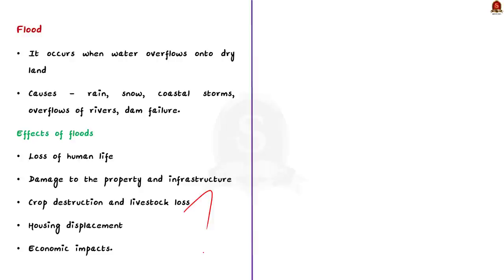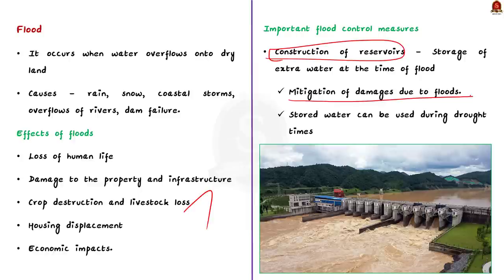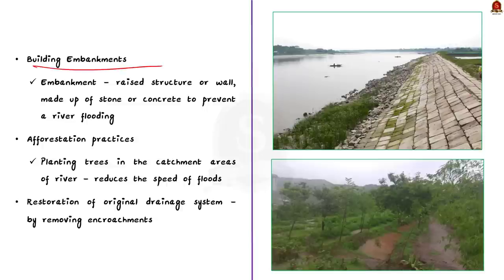Now, the important flood control measures. The first measure is the construction of a reservoir. By constructing reservoirs in the course of a river, we can store extra water at the time of flood — this has a double advantage: it mitigates flood damage, and the stored water can be used during drought times. The second measure is building embankments — raised structures or walls made of stone or concrete to prevent a river from flooding. Building an embankment on the banks of the river helps address overflow during flooding.